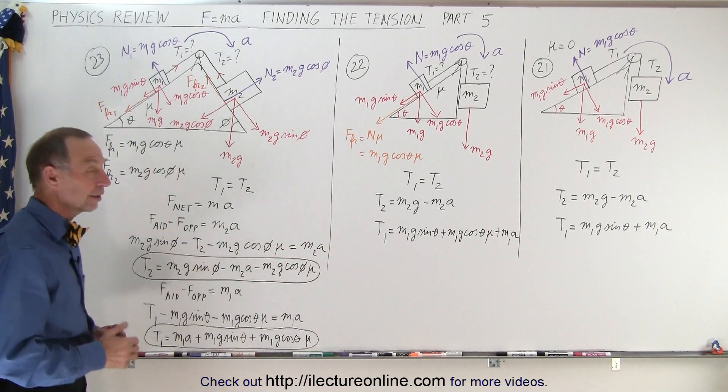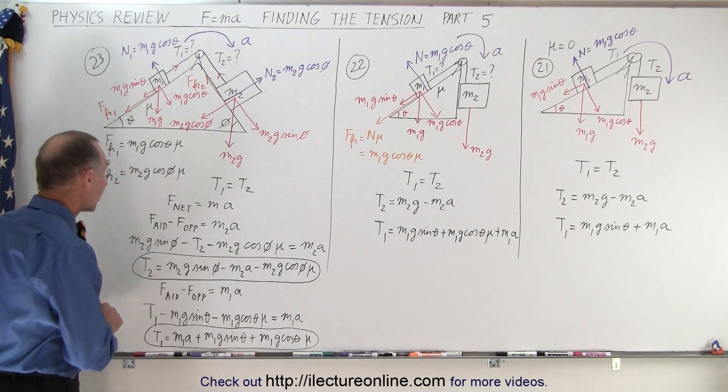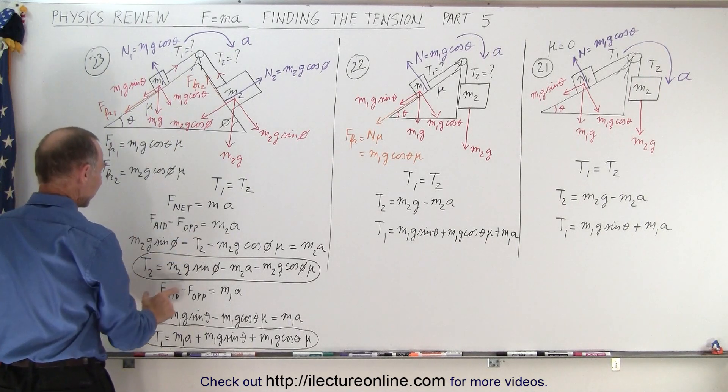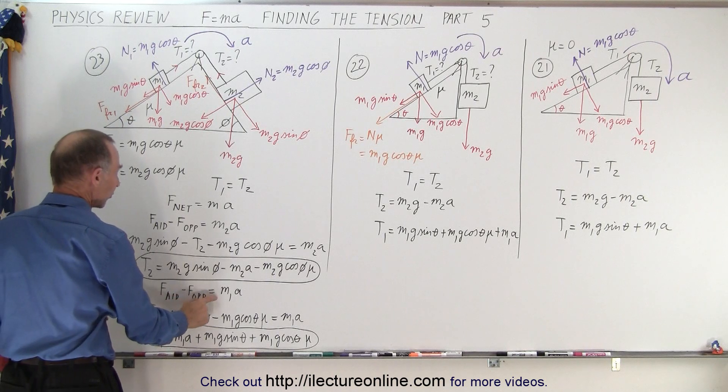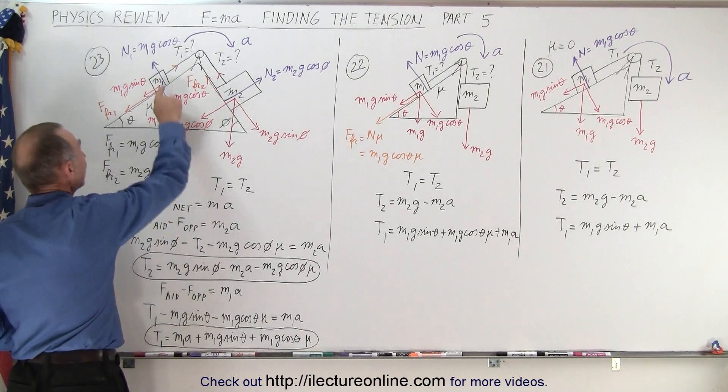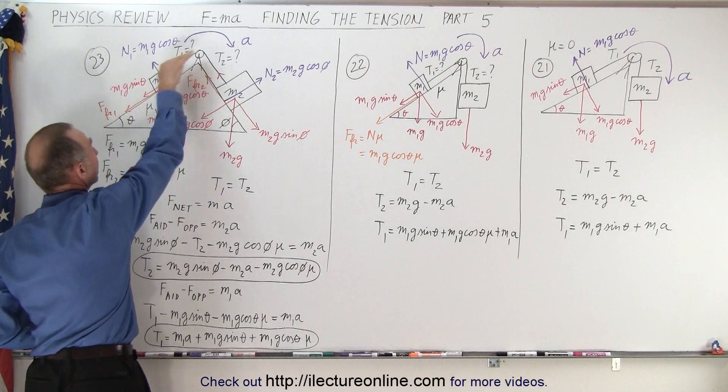Secondly, we're going to look at M1 and we can say that the aiding force minus the opposing force equals M1A. The aiding force, the acceleration is up the incline. The only force that does that is T1, and so T1 is the aiding force.